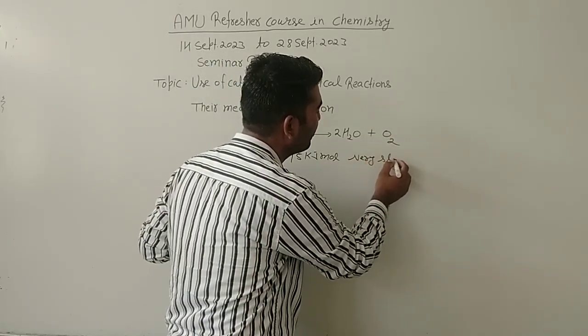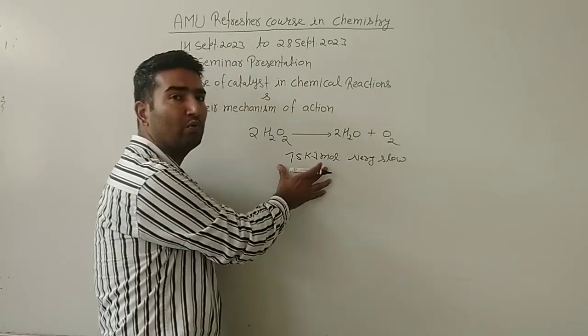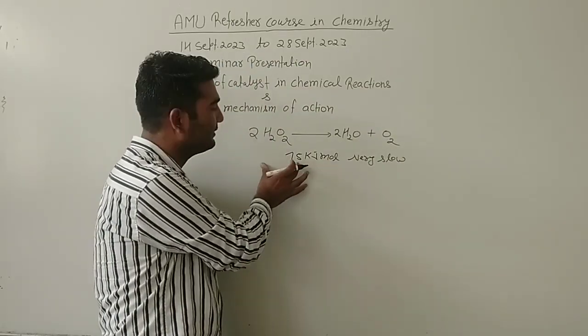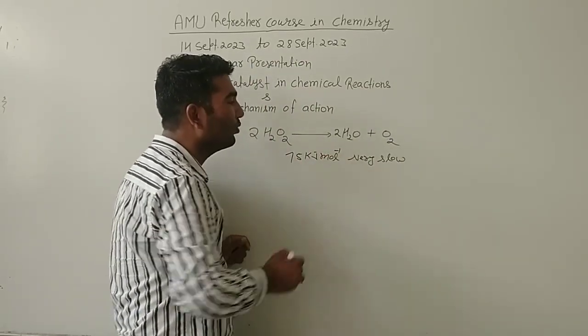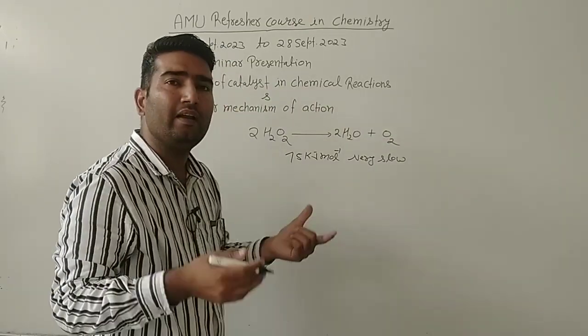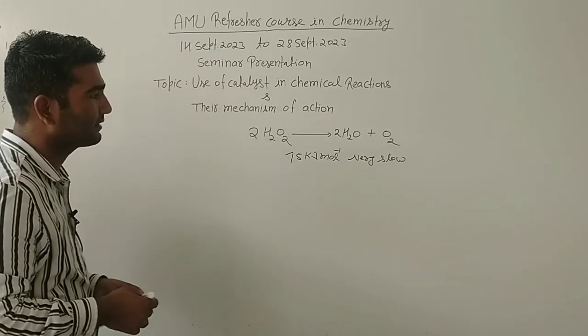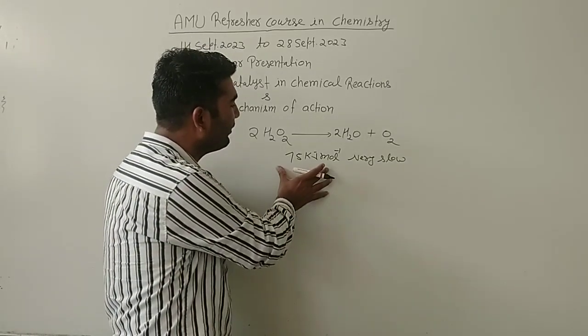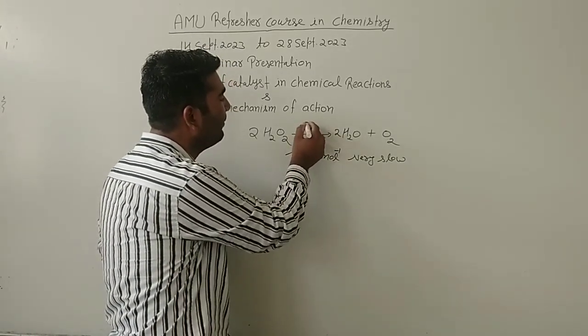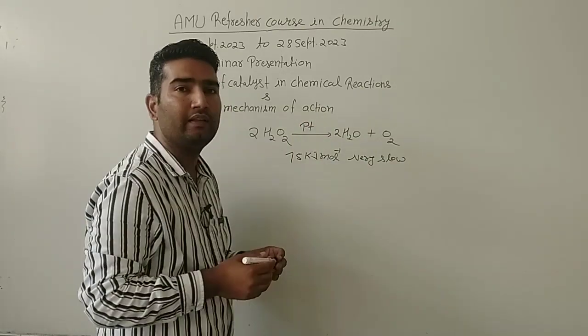This reaction is very slow because it requires a large amount of activation energy which is 75 kilojoule per mole. We need a substance which can increase the speed of this reaction. So what we do? We add platinum metal in this reaction.